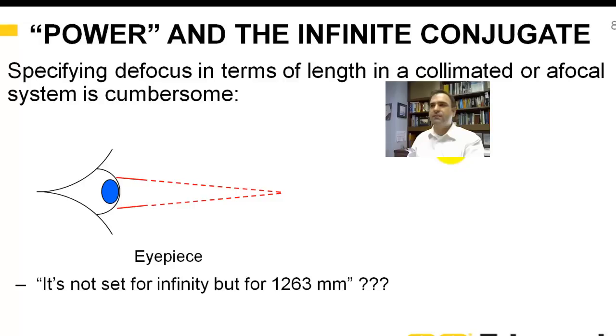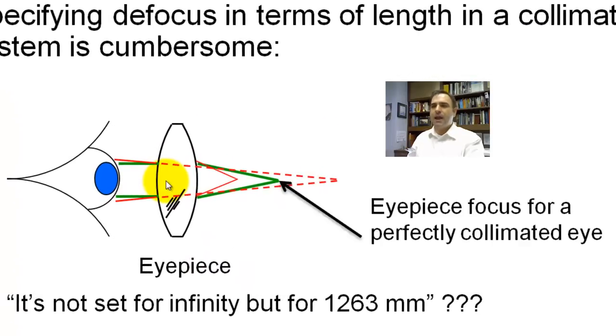Let's talk about power and the infinite conjugate. So specifying defocus in terms of a length is kind of cumbersome. So for instance here, we've got an eye and we'll say I'm not focused at infinity but at 1263 millimeters. And let's say this is an eyepiece. So we'll put an eyepiece in place and we've got the green rays for a perfectly collimated eye. The green rays come to a focus here. This is where your focus is for this focal length of lens.